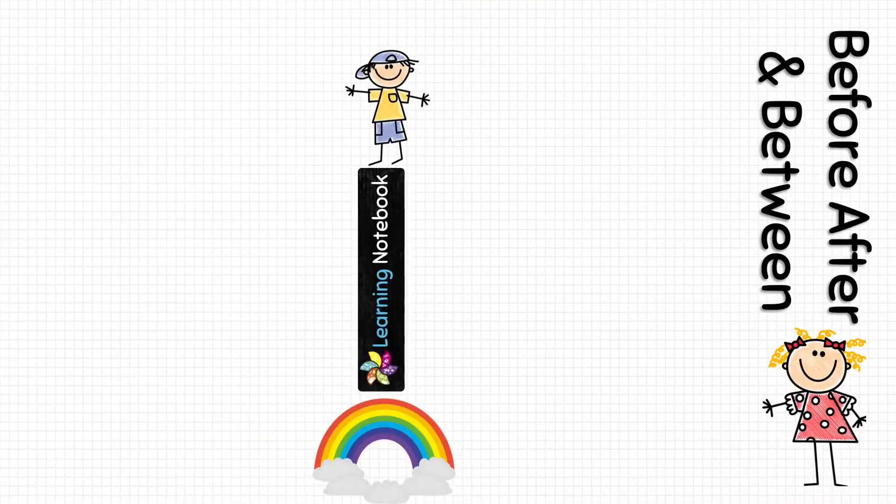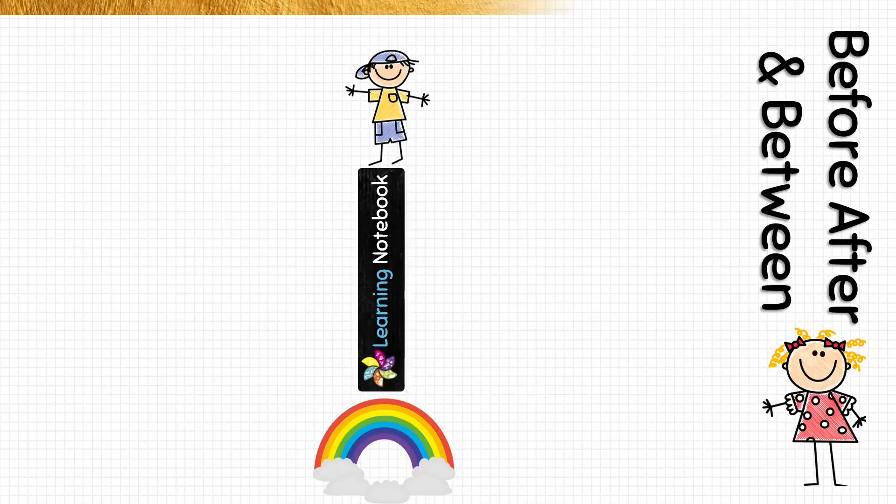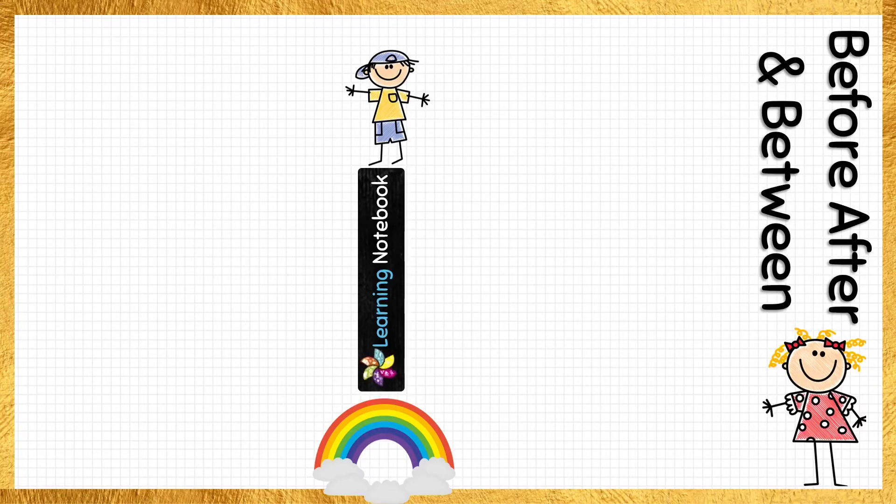So now we have made all the preparation of our working model, so let's assemble it. Let's take one white A3 size sheet and decorate its border with glitter tape.